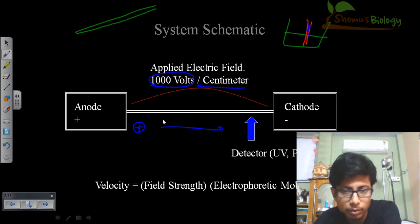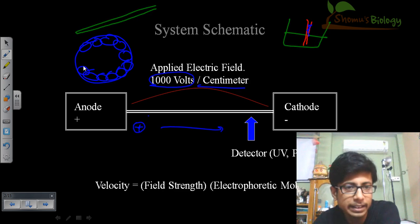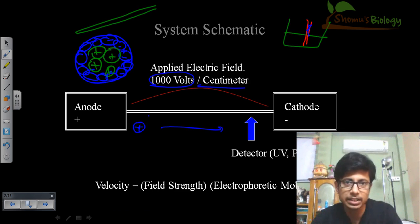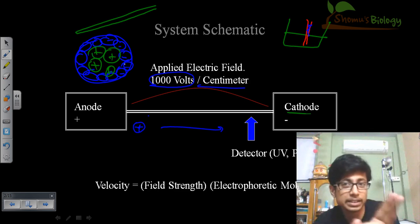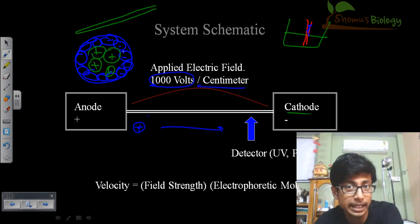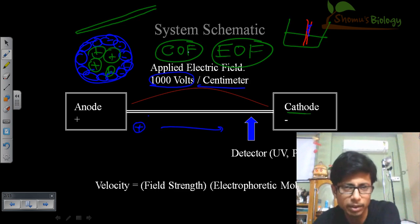The movement of the molecule through the capillary involves two interactions. Looking at the cross-section of the capillary, the inner surface carries negatively charged molecules — specifically ionized silenol groups. The positively charged chemical interacts with this negatively charged inner surface while also migrating toward the negatively charged cathode. These two interactions combined form what we call the electroosmotic force, or EOF.